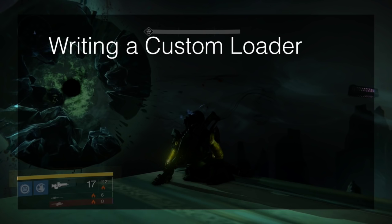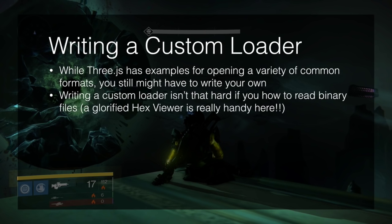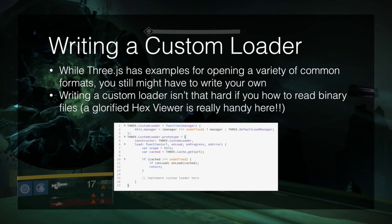Now that we've shown loading known file formats, we want to create a custom loader because there probably aren't many open-source Unreal PSK loaders for Three.js. This is where my hex viewer comes in handy — you open the files, inspect the raw data, figure out where things are, and write your code accordingly. Here's the basic structure of a custom loader. You'll want to create a custom AJAX request function to make sure you're receiving binary data correctly, unless your model files are text-based.